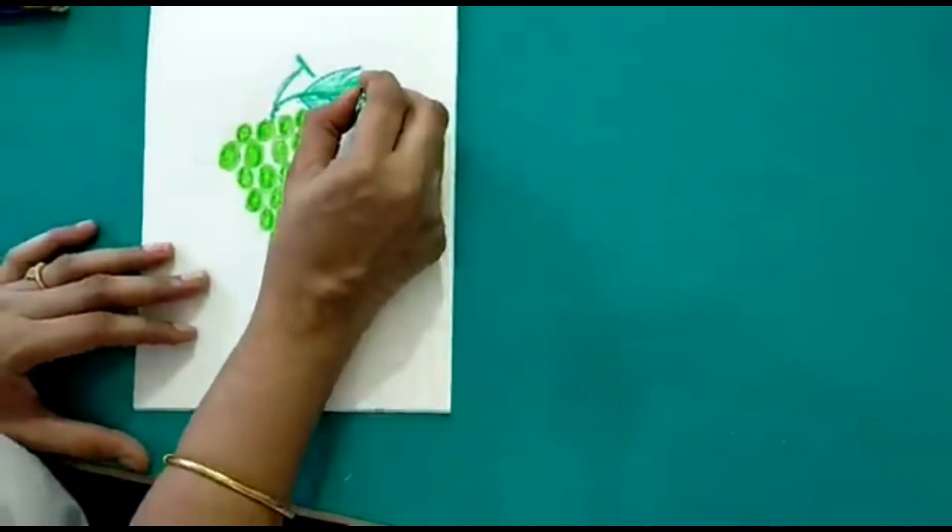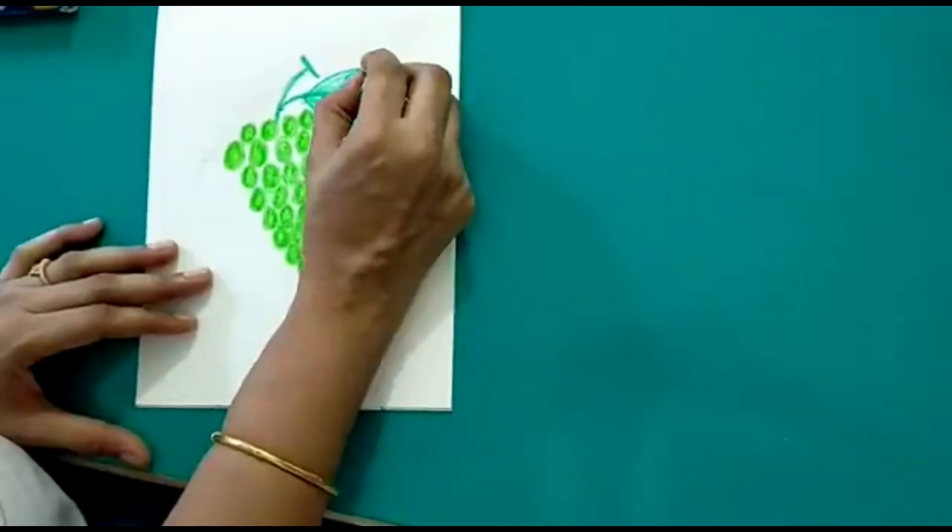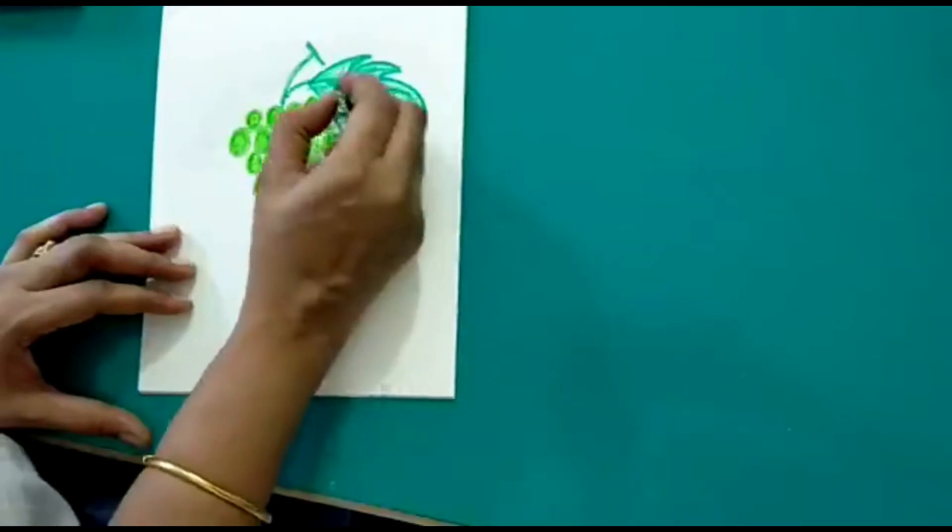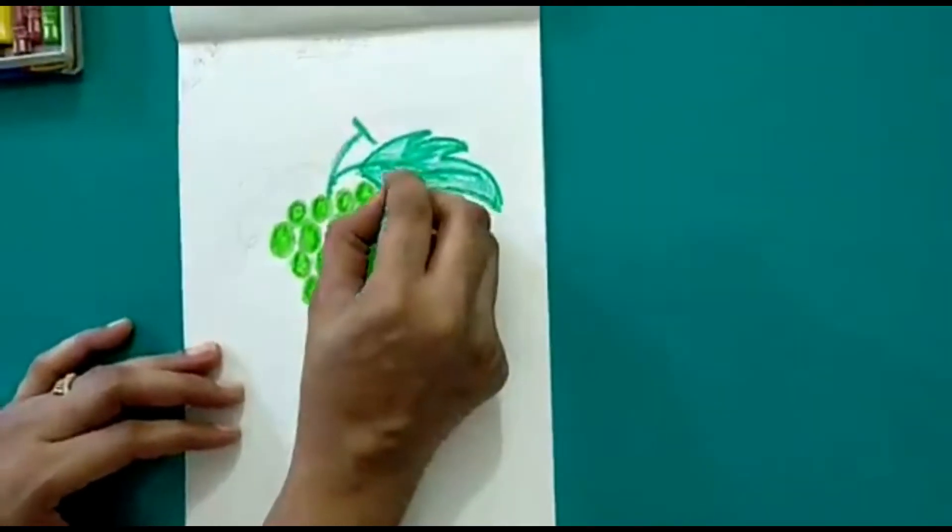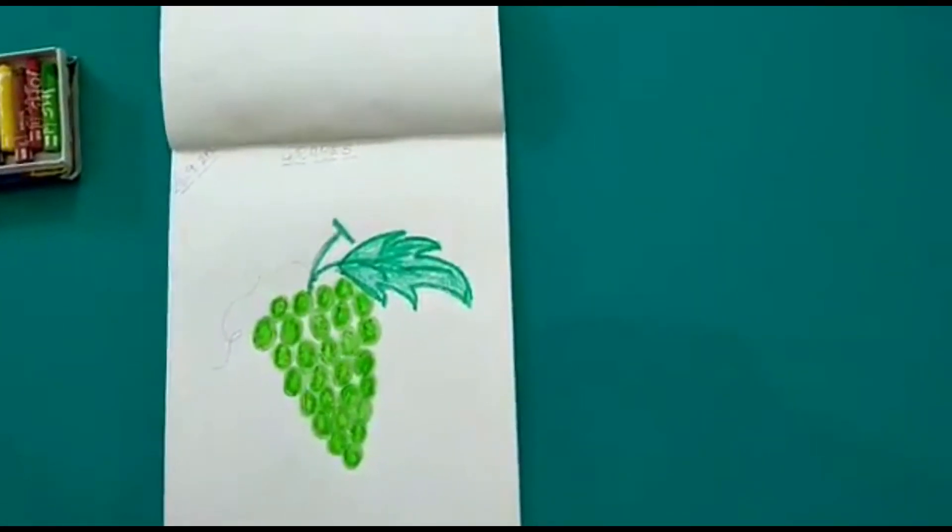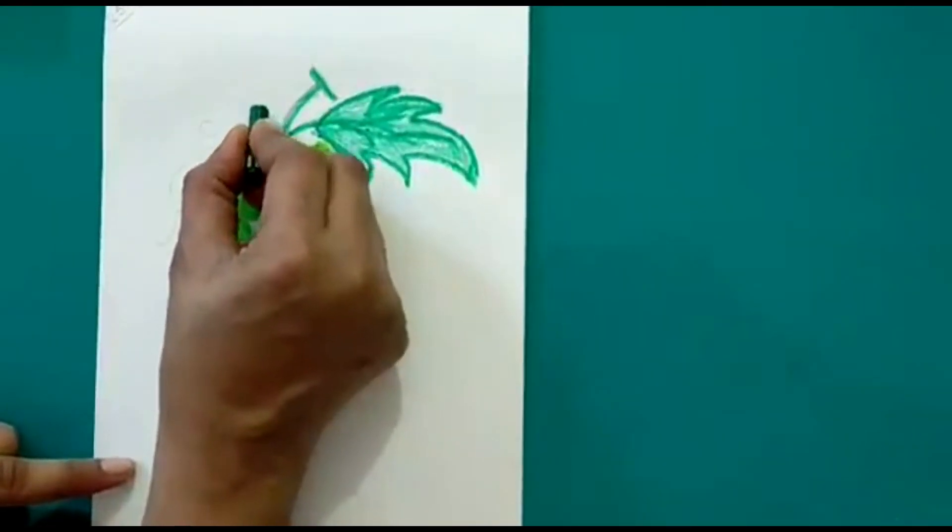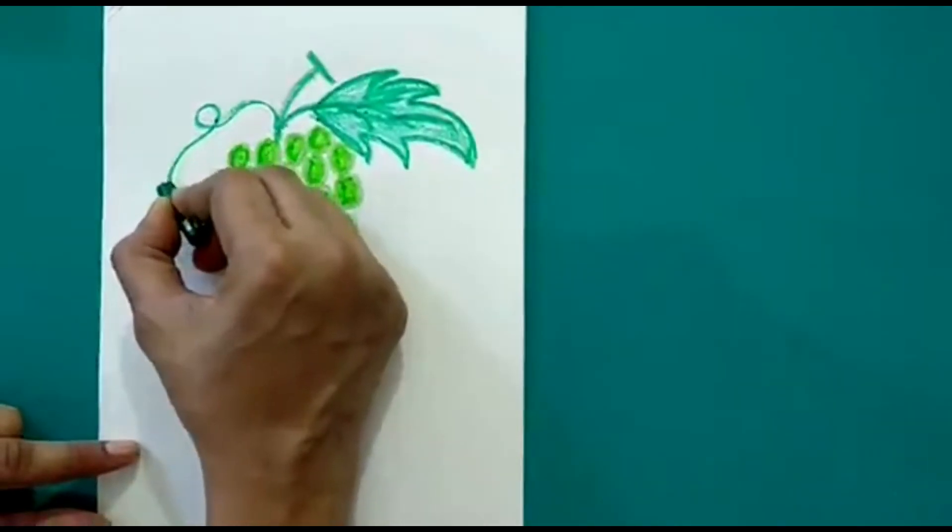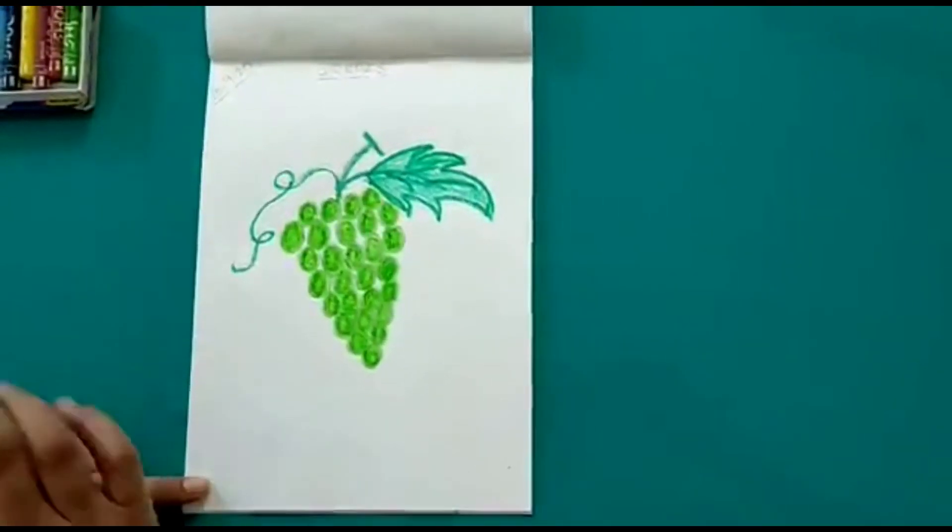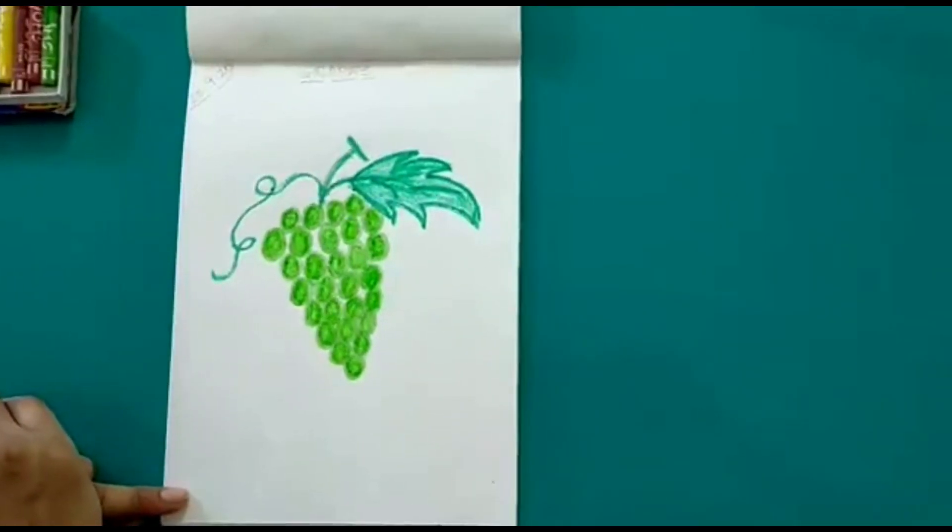So here I have colored the leaf as well. Okay, we have finished with the leaf now. That's it, we have finished coloring our grapes. So in your drawing book you have to practice this and color it neatly. Thank you children.